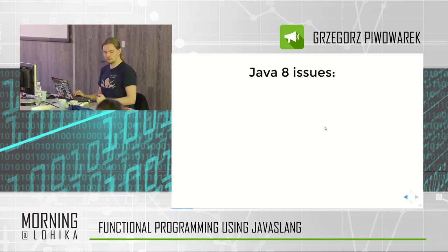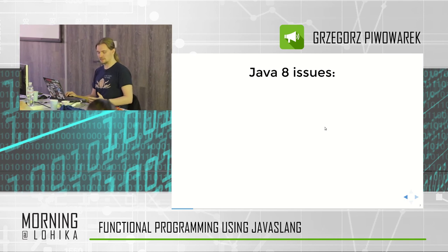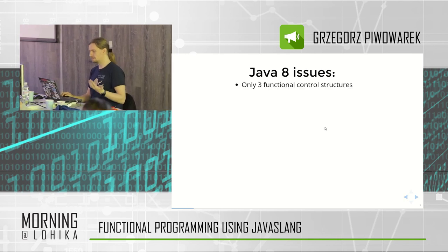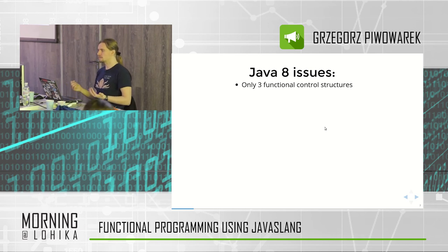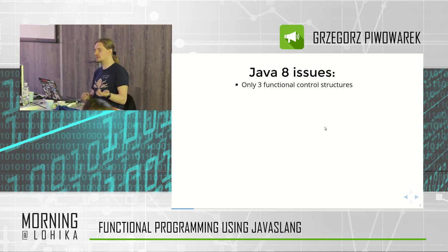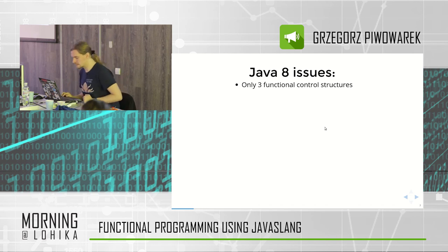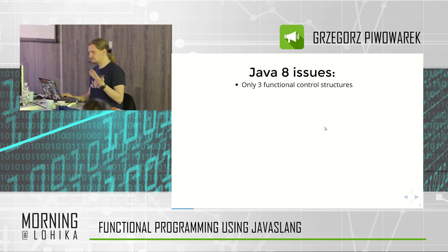What happened? When people started noticing that there are only three functional control structures, three monadic containers, and languages like Scala have much more — they have Try, Validation, Either, Lazy, and other stuff like this. Why not add them here?